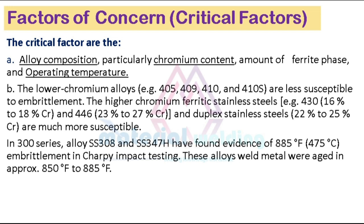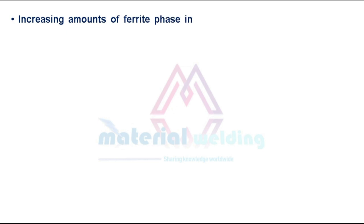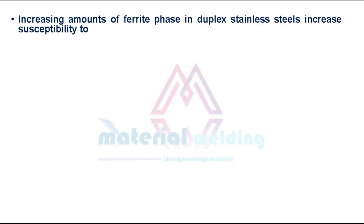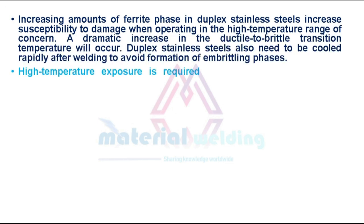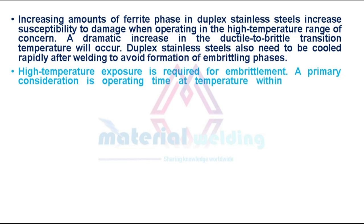In the 300 series, alloys SS 308 and SS 347H have shown evidence of 885 degrees Fahrenheit embrittlement in Charpy impact testing. These alloy weld metals were aged at approximately 850 to 885 degrees Fahrenheit. Increasing amounts of ferrite phase in duplex stainless steels increase susceptibility to damage when operating in the high temperature range of concern. Duplex stainless steels also need to be cooled rapidly after welding to avoid formation of embrittling phases.